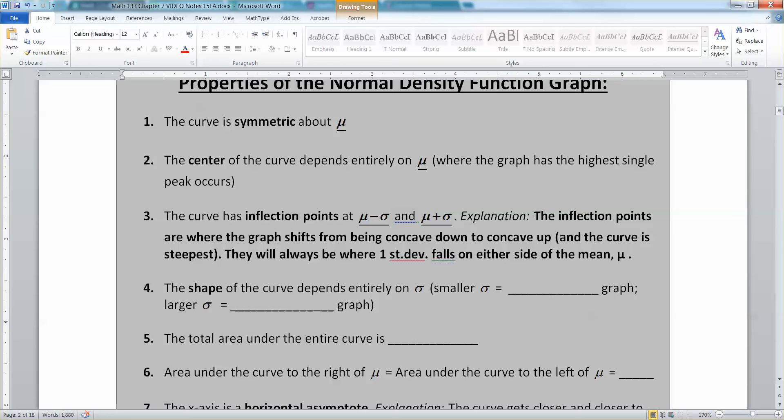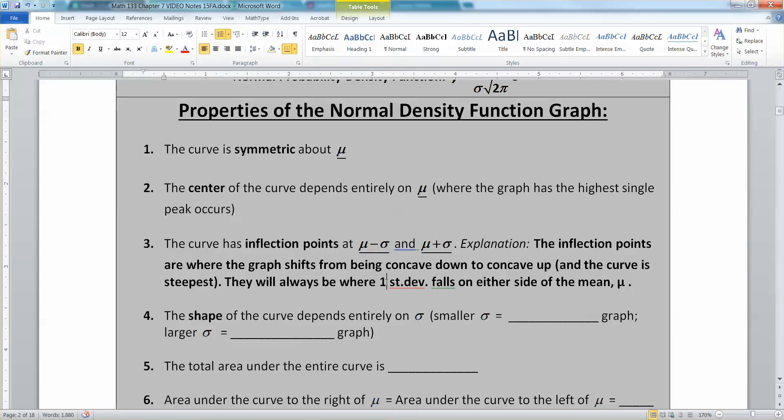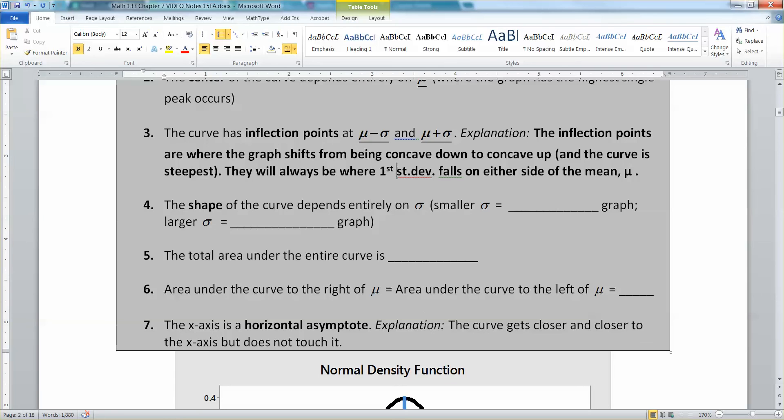All right, so that's where your standard deviations fall. And that's what I wrote here. The inflection points are where the graph shifts from being concave down to concave up, and the curve is the steepest. They'll always be where the first standard deviation falls on either side of the mean. So the first standard deviation falls on either side of the mean. All right, now what about the shape? Well, the shape of the curve depends on what your standard deviation is. So the smaller your sigma, the narrower slash steeper your graph is. And the larger your sigma, the wider slash shallower, I guess, more spread out your graph is.